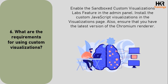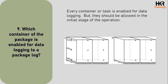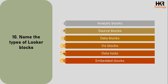The sixth question: what are the requirements for using custom visualization? You should enable the sandbox custom visualization Labs feature in the admin panel, install the custom JavaScript visualization in the visualizations page, and ensure that you have the latest version of the Chromium renderer. The eighth question: what data is included in table calculations? Table calculations run after the query is returned; they operate on the data in the Explore table. The ninth question: which container of the package is enabled for data locking through package lock? Every container or task is enabled for data locking but must be allowed in the initial stage of the operation.